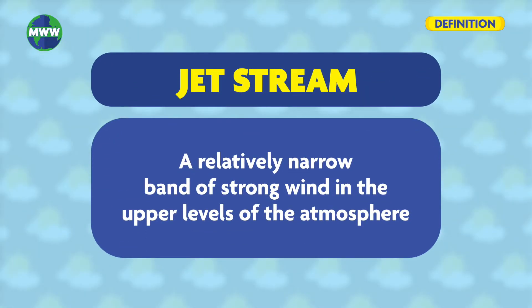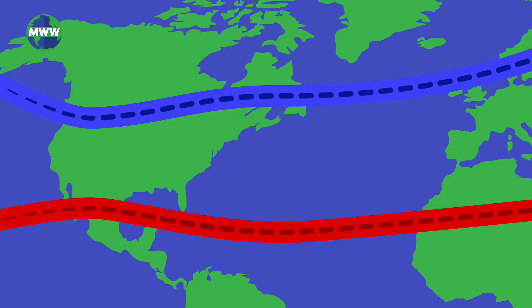A jet stream is a relatively narrow band of strong wind in the upper levels of the atmosphere. They move from west to east and meander around the Earth.